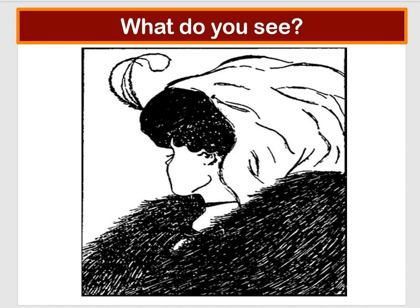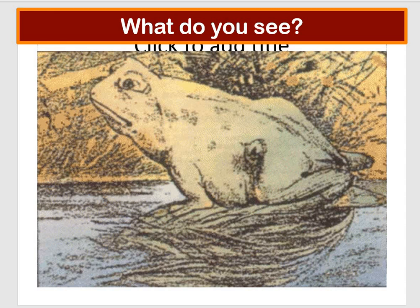Here is another example. What do you see in this picture? People see different things — some people see a frog and some people see a horse with a horse's head on the side.